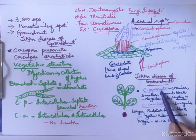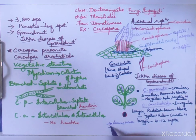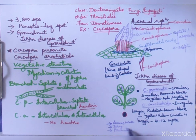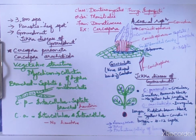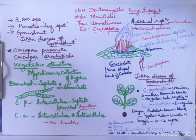Cercospora personata is more dangerous than arachidicola. As a result of the disease, the leaves become very weak, dry up, and premature falling of the leaves takes place. Consequently, the groundnuts become smaller in size and fewer in number.